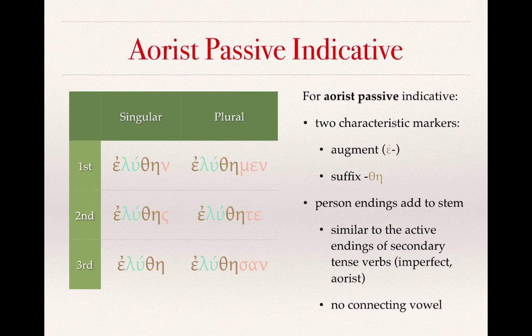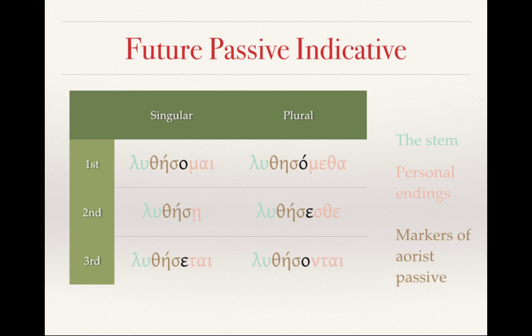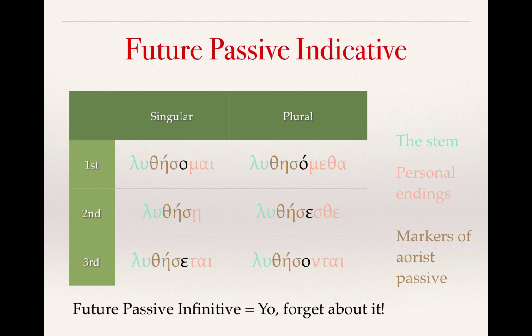The second form we're going to learn is the future passive indicative, which is based broadly on the aorist passive indicative. Luthesomai: I will be loosened. Luthese: you singular will be loosened. Luthesetai: he, she, or it will be loosened. Luthesometha: we will be loosened. Luthesesthe: you all will be loosened. And luthesontai: they will be loosened. There is a future passive infinitive form, but it occurs so rarely in Greek, or at least in the Greek of the New Testament, that you don't need to worry about it.